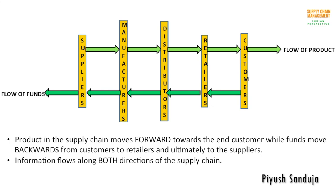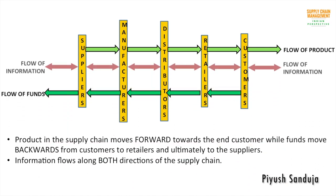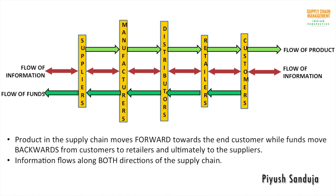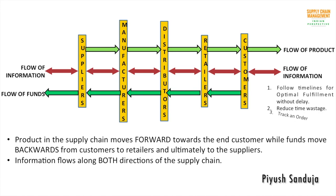The flow of information is shown by the maroon arrows. Information flow is unbiased to any particular direction and can happen along both directions between any two stages. Flow of information ensures that all stages follow the agreed-upon timelines in order to optimally fulfill a customer's demand without delay, reduce wastage of time, and track an order during different fulfillment stages.